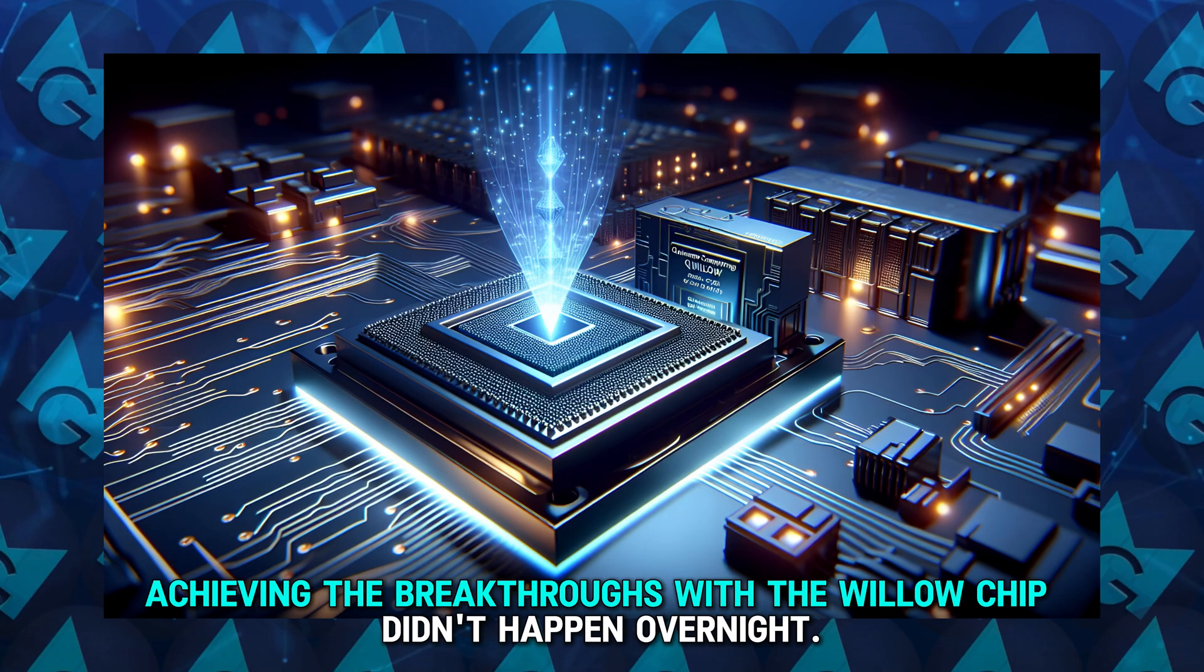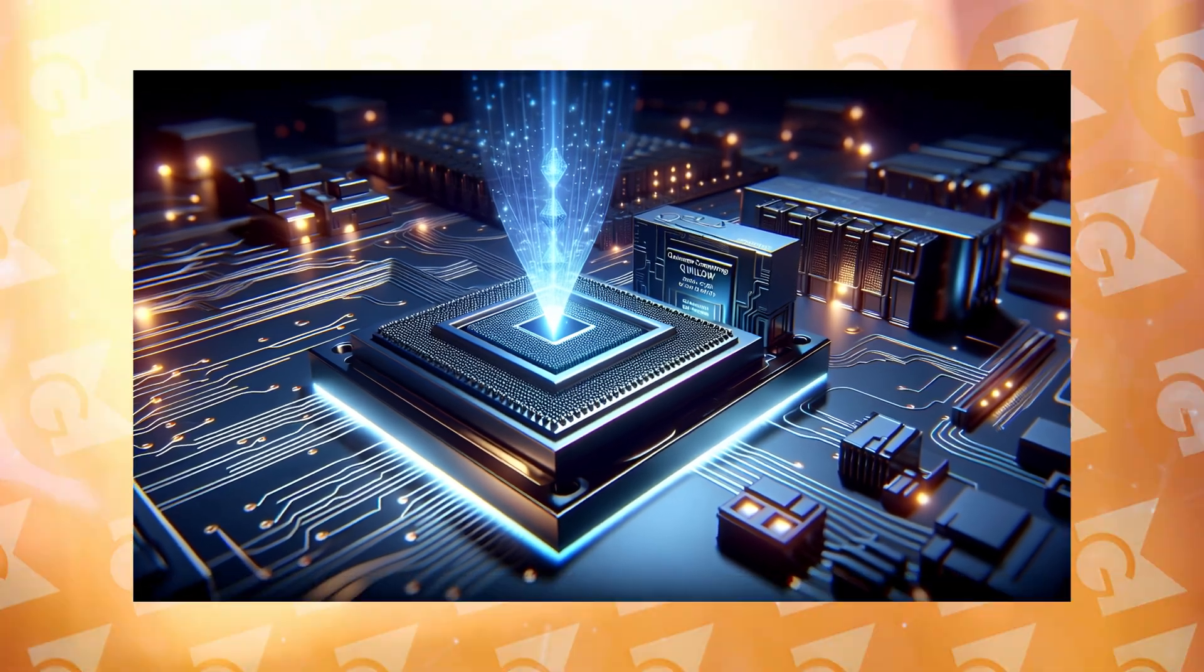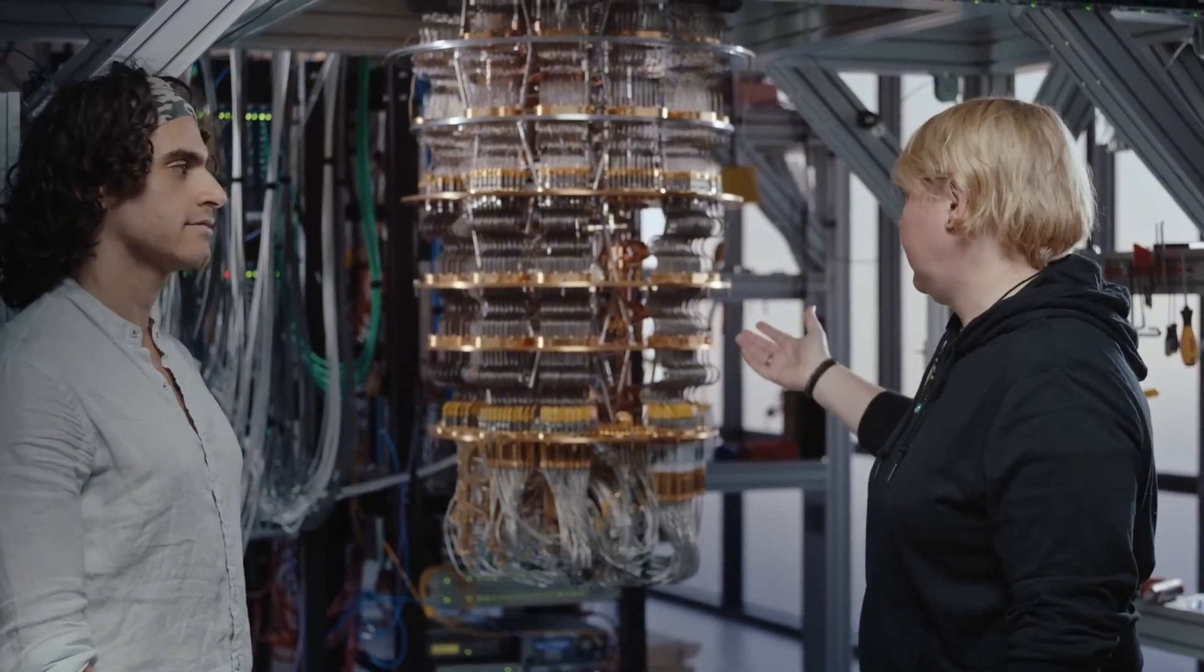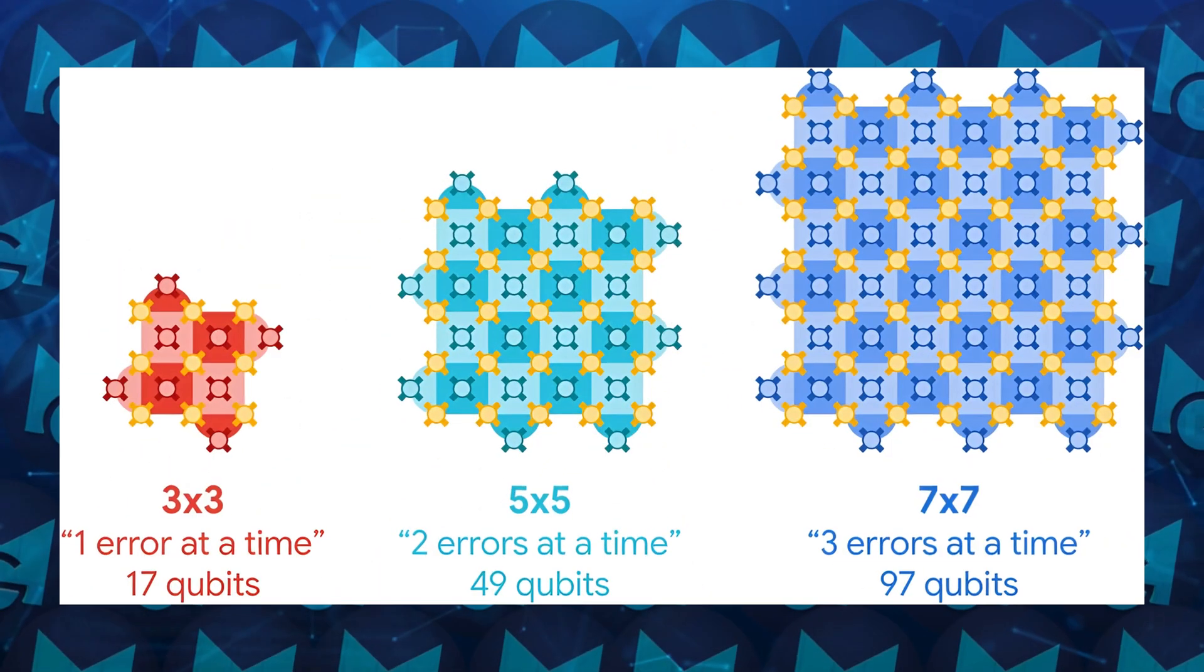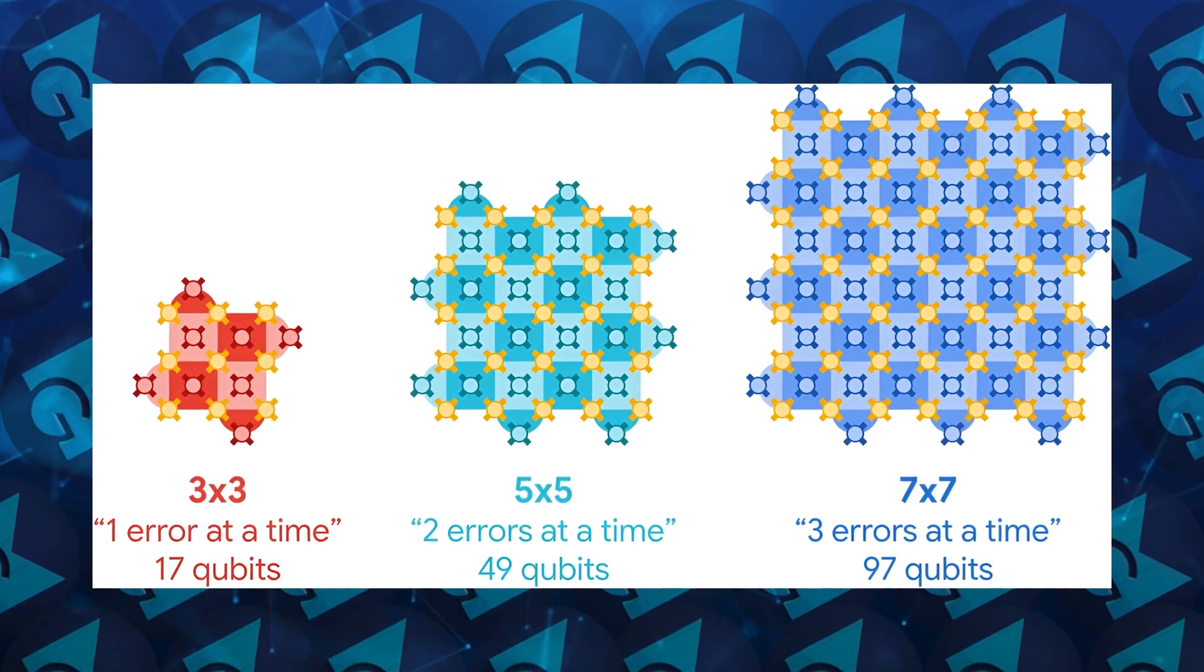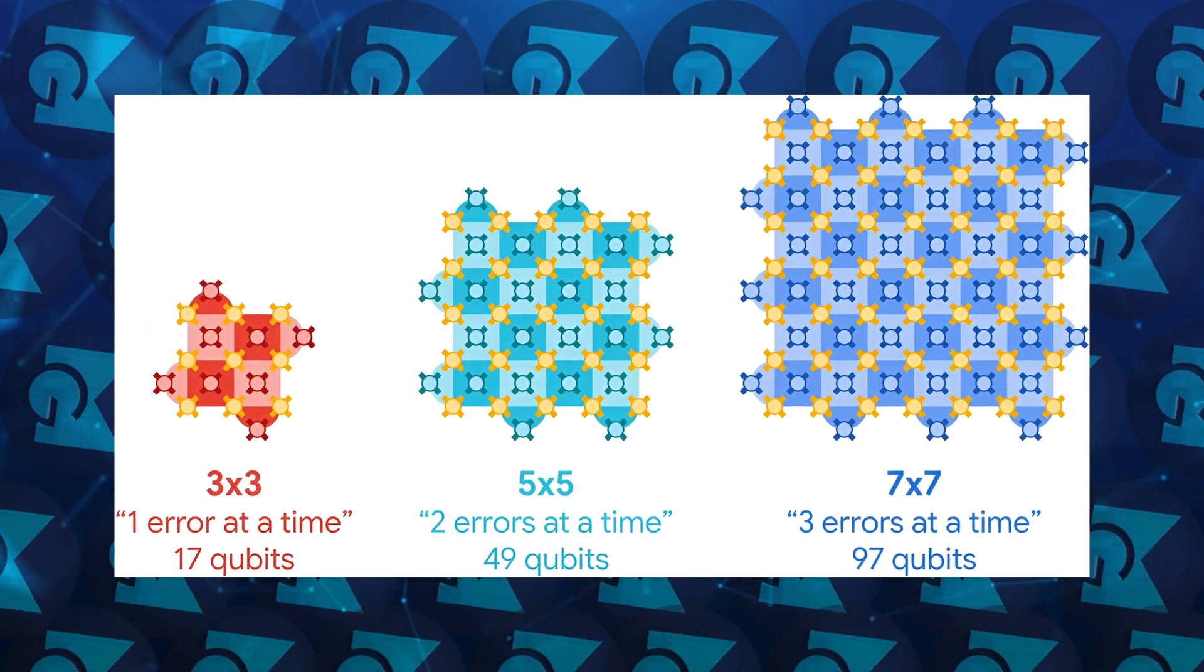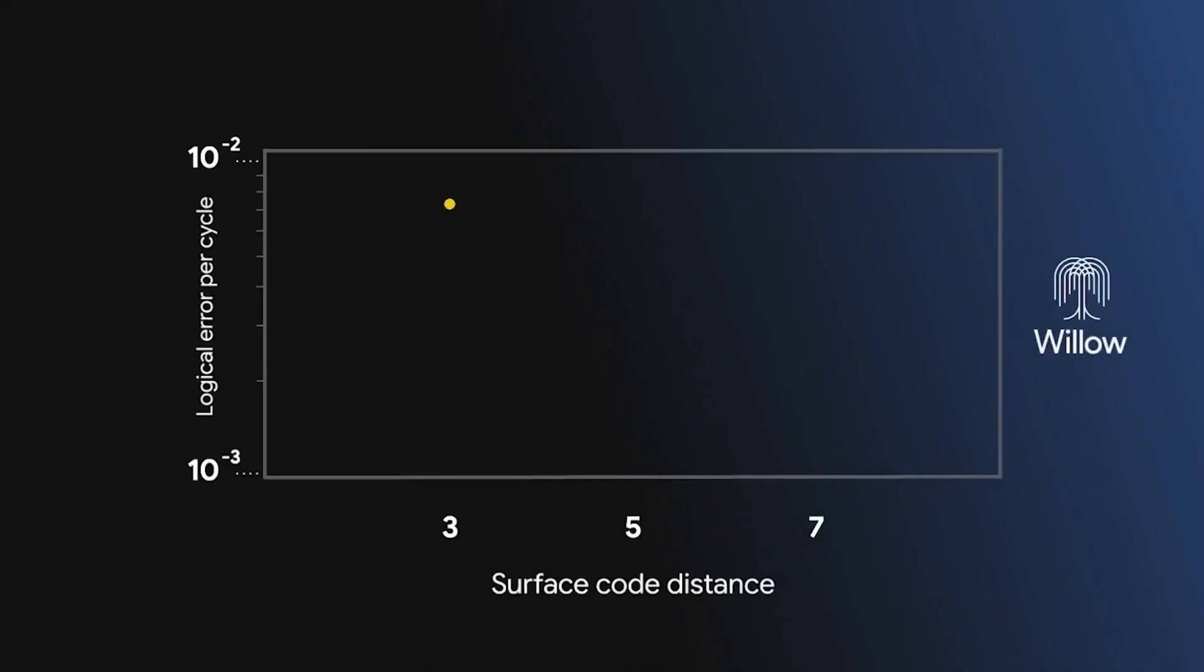Achieving the breakthroughs with the Willow chip didn't happen overnight. Researchers tirelessly worked on developing arrays of qubits in larger grids, moving from 3x3 to 5x5, and then to a 7x7 configuration. With each increase in grid size, Willow managed to cut the error rates in half.